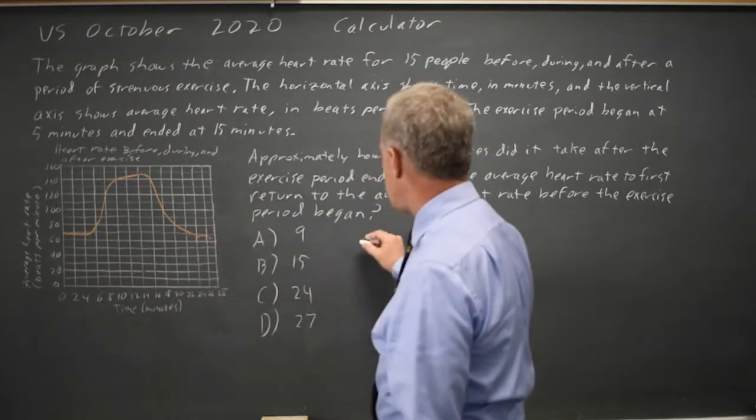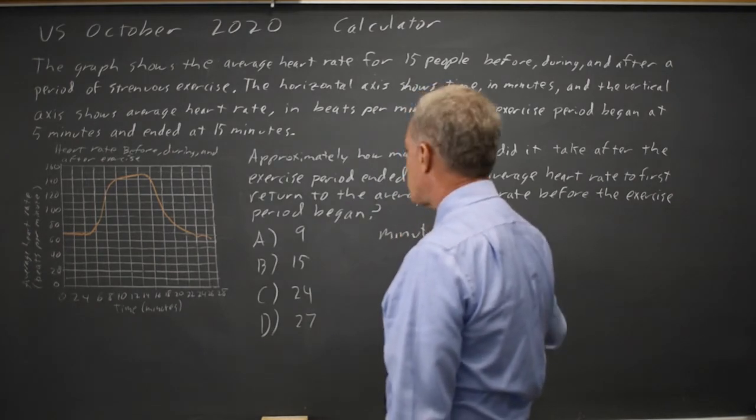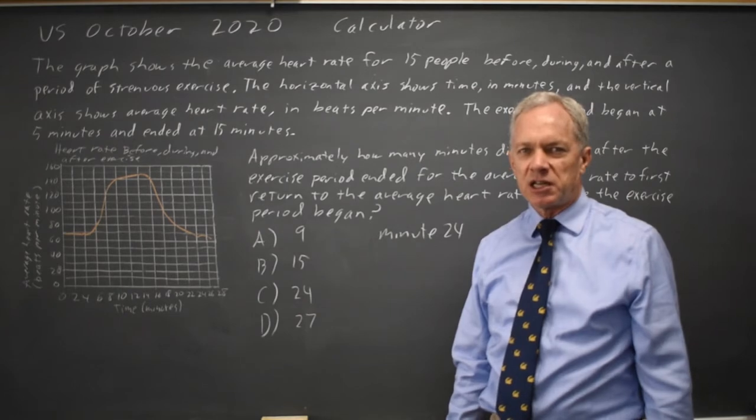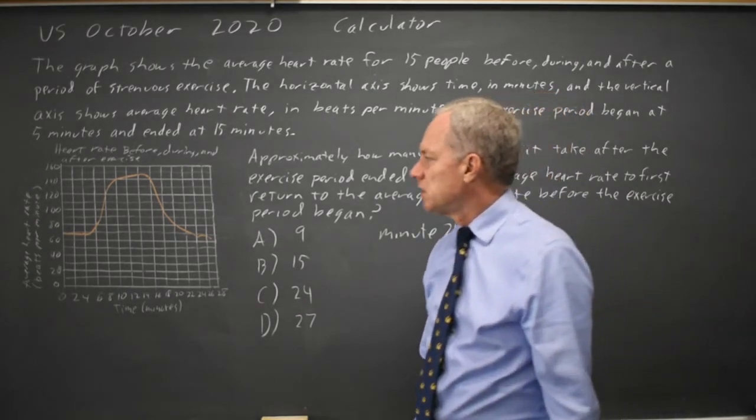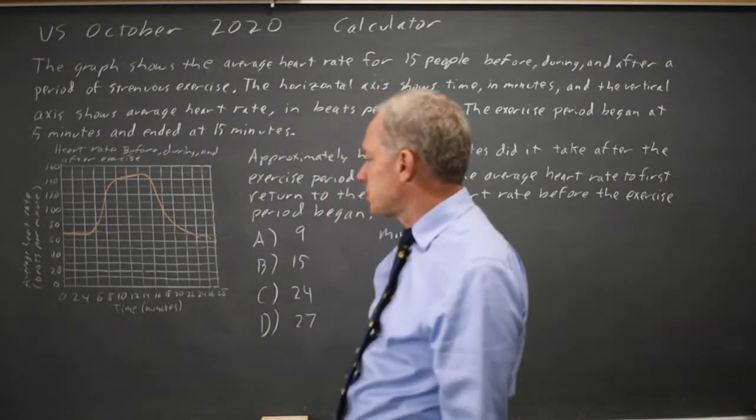And after the exercise period ended, it looks to me like it goes just below the 70 at minute 24. There's a little bit of ambiguity because of the thickness of the line and the fuzziness of the print or the graphic.